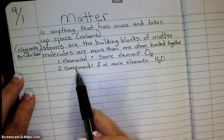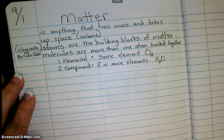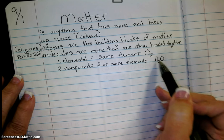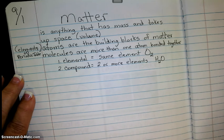Or you can have a compound molecule, which is more than one element bonded together. Here, H2O, water. Two atoms of hydrogen, one atom of oxygen bonded together. That's called a compound.